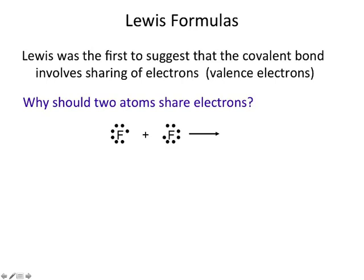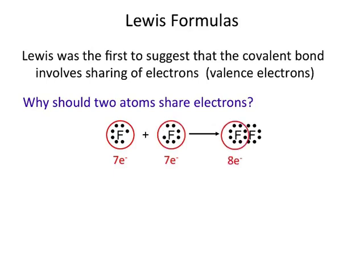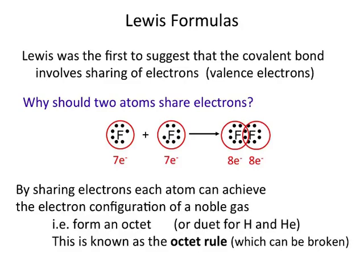So why would atoms want to share electrons? Here are the Lewis dot symbols for fluorine atoms with seven valence electrons. If they were to share electrons, then each individual fluorine atom has seven electrons, but if they share these two electrons, then they can each have eight electrons. Eight electrons is the noble gas configuration, and that's very stable. So by sharing these electrons they get something out of it — they get this stable electron configuration for both atoms. Atoms will typically form what's known as an octet, which means they have eight electrons assigned to them in the Lewis structure, including both shared electrons.